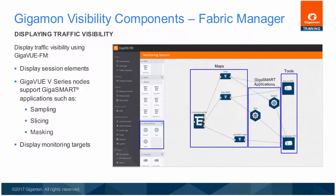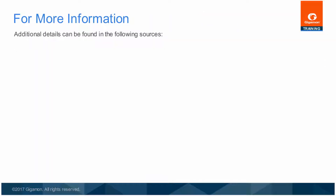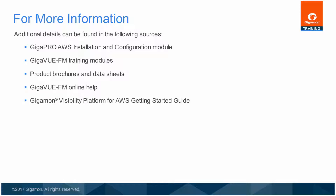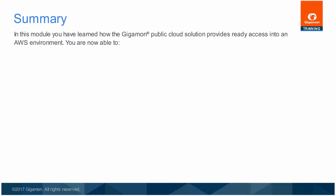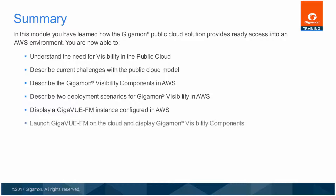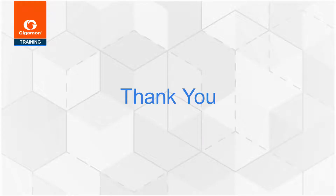Additional details about Gigamon visibility with AWS can be found in the Gigapro AWS Installation and Configuration Module, in the Training Modules for Fabric Manager, in the Product Brochures and Data Sheets for Fabric Manager and Gigaview VM, in the Gigaview FM Web Interface Online Help Topics, and in the Gigamon Visibility Platform for AWS Getting Started Guide. In this module, you have learned how the Gigamon Public Cloud solution provides ready access into an AWS environment, including understanding the need for visibility in the public cloud, describing current challenges, describing the Gigamon visibility components in AWS, two deployment scenarios, displaying a Gigaview FM instance configured in AWS, and launching Gigaview FM on the cloud. This completes the module describing the Gigamon Visibility Platform public cloud solutions using Amazon Web Services.